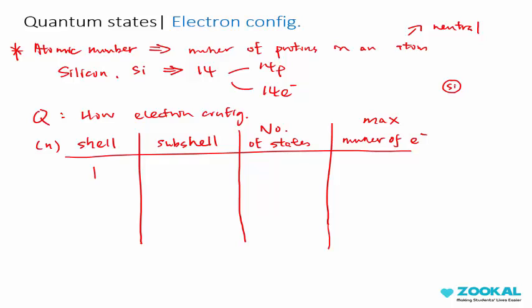When n equals to 1, which is the first shell, let's draw it out. This is your silicon. For the first shell, n equals to 1, you have only one subshell which is called S subshell. S subshell has 2 states, 2 times 1, 2 states. The maximum number of electrons occupied by this subshell will be 2 as well. Remember silicon has 14 electrons, so now you have 2 electrons inside this.